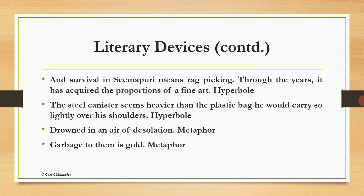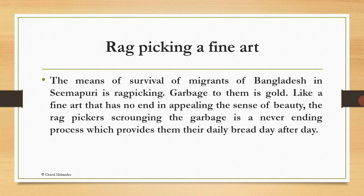Scrounging for gold is a metaphor. Rag-picking is a fine art — the means of survival of migrants from Bangladesh in Simapuri is rag-picking. Garbage to them is gold, like a fine art that has no end in appealing the sense of beauty. The rag-pickers scrounging the garbage is a never-ending process which provides them their daily bread, day after day.